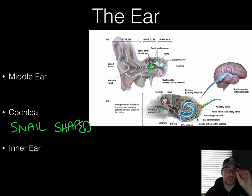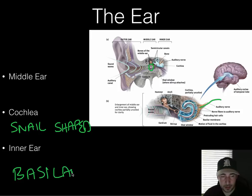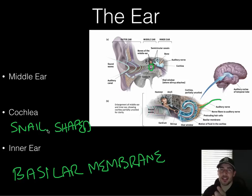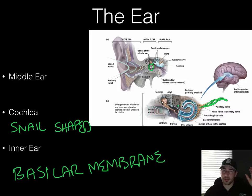Those little hairs are located in your basilar membrane — that's where they are. The fluid causes the hairs in the basilar membrane to shake, and that shaking sends a message through your nerve fibers down through your auditory nerve — which is just a bundle of neuron axons — to your auditory cortex. But first it stops at your thalamus, because all your senses stop at the thalamus first, except for olfaction — your sense of smell.